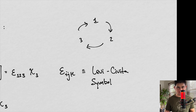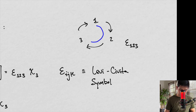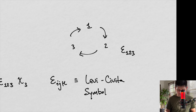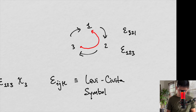The Levi-Civita symbol takes these i, j, and k numbers and spits out either a 1 or a negative 1. So epsilon 1, 2, 3 — if we do that, we're going clockwise, so we go 1, 2, 3. When we go clockwise, that's going to be a 1. As another example, epsilon 3, 2, 1 — we're going 3, 2, 1, so we're going counterclockwise. This is going to equal negative 1 because we're going counterclockwise, and the clockwise case equals 1.